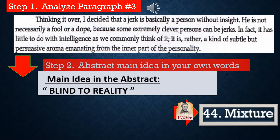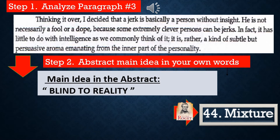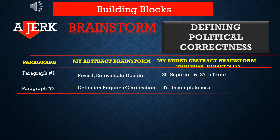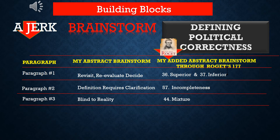Similarly, moving on to paragraph 3, I read and analyzed that the main idea is to be blind to reality. Then I went through and looked for Roger to help find some more abstract concepts to build upon that, and I found number 44, mixture. There's no right or wrong, it's just my opinion, and you do the same. You read the paragraph, try to find out what the main idea is, and then go and try to support your main idea by looking through the 177 Roger's abstract concepts to try to expand your thinking. By now you should be familiar with our building block process as we go through paragraph 3 and continue to lay out the abstract concepts, then look for help in Roger's Thesaurus to add 44, mixture.